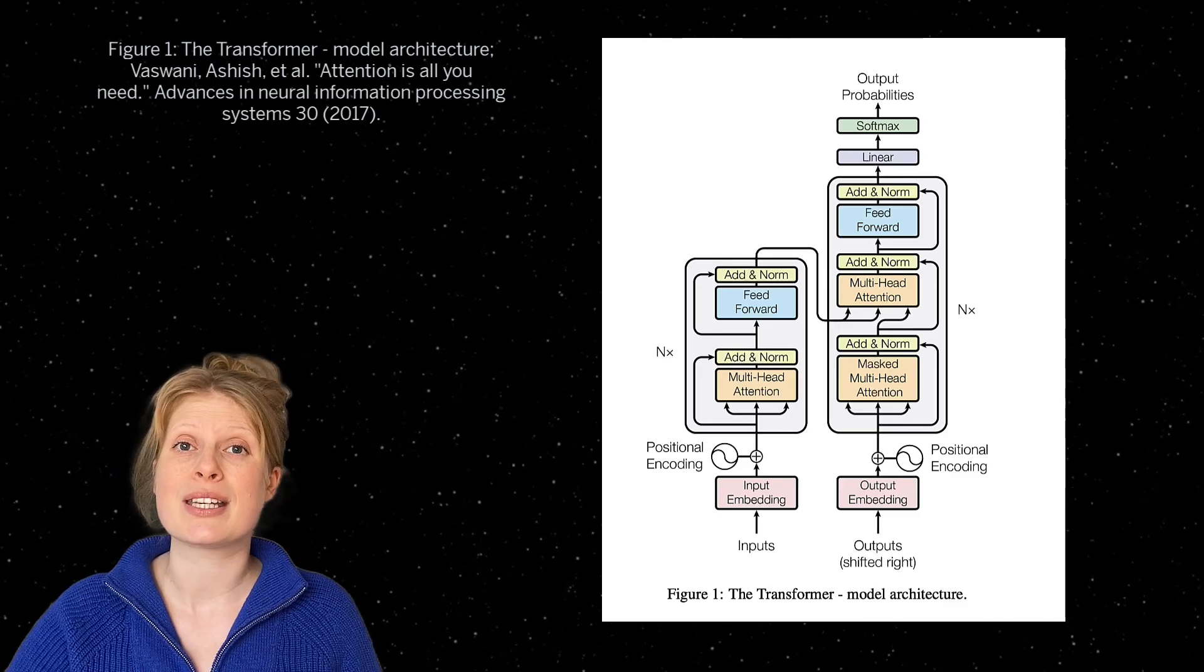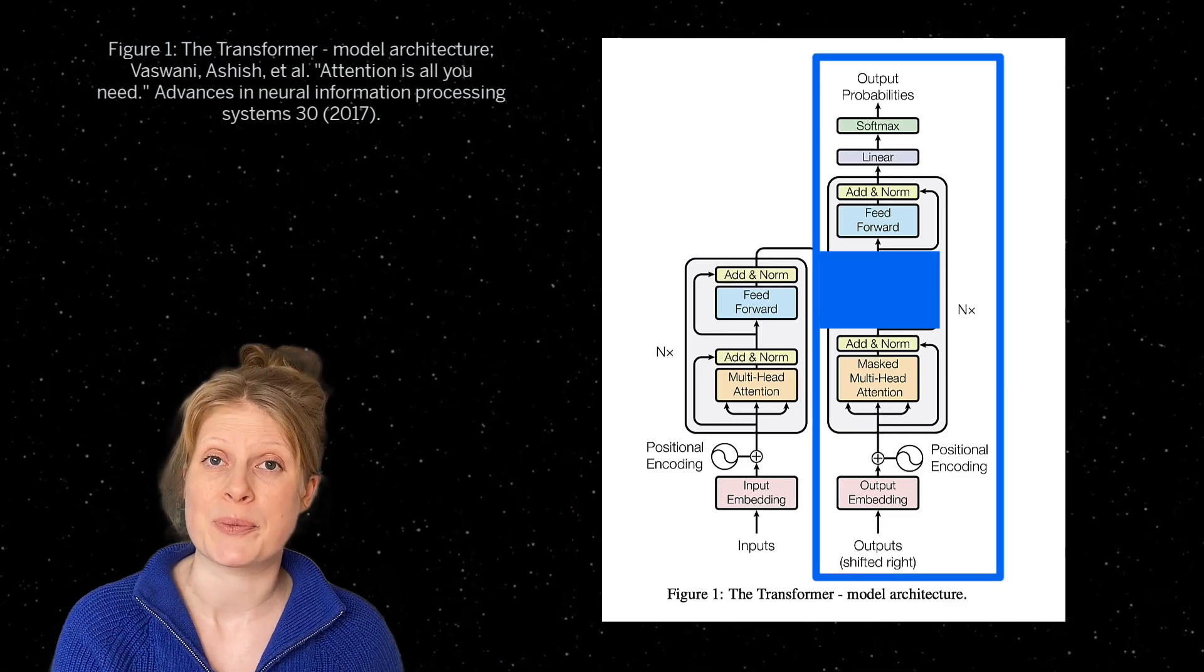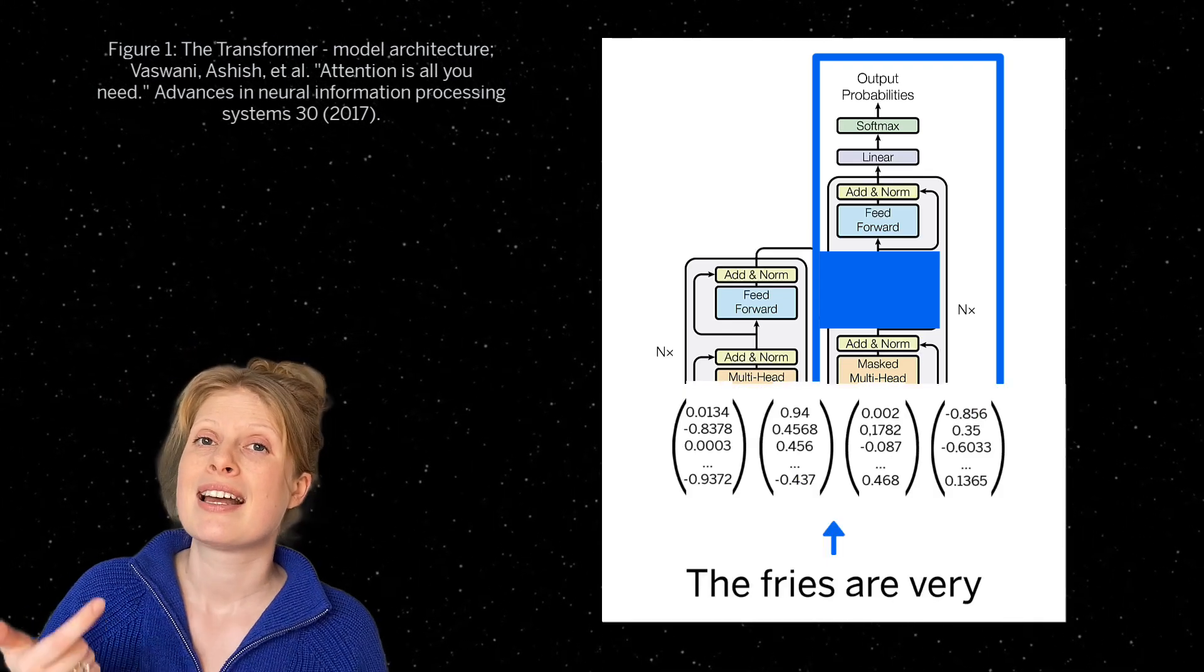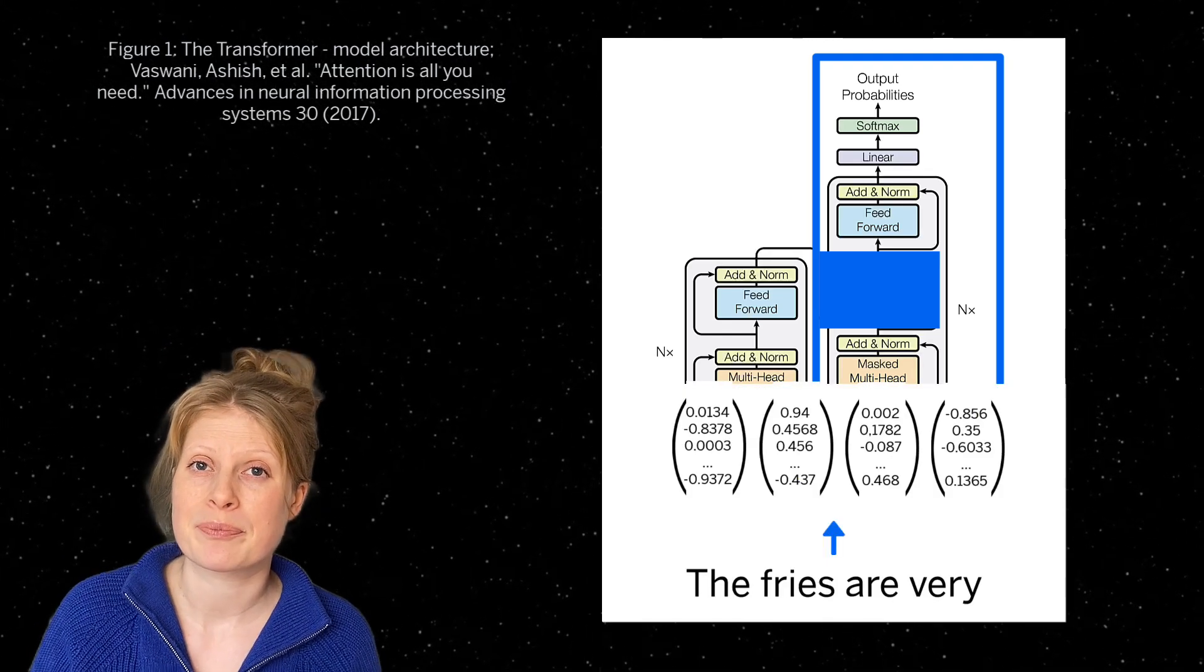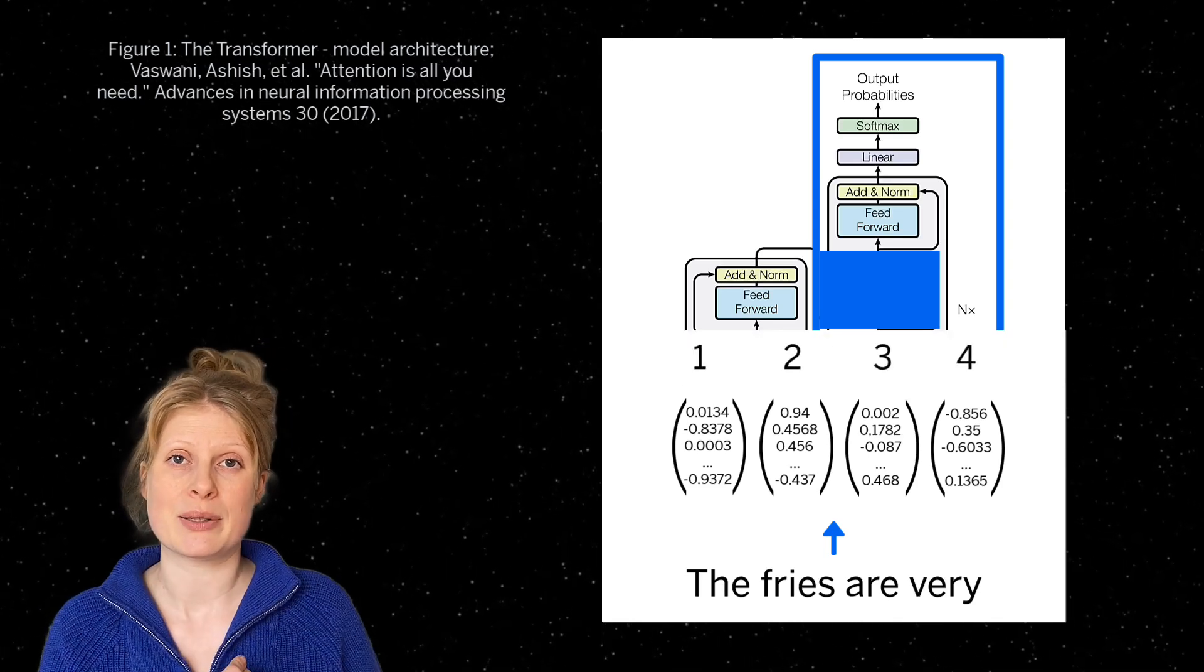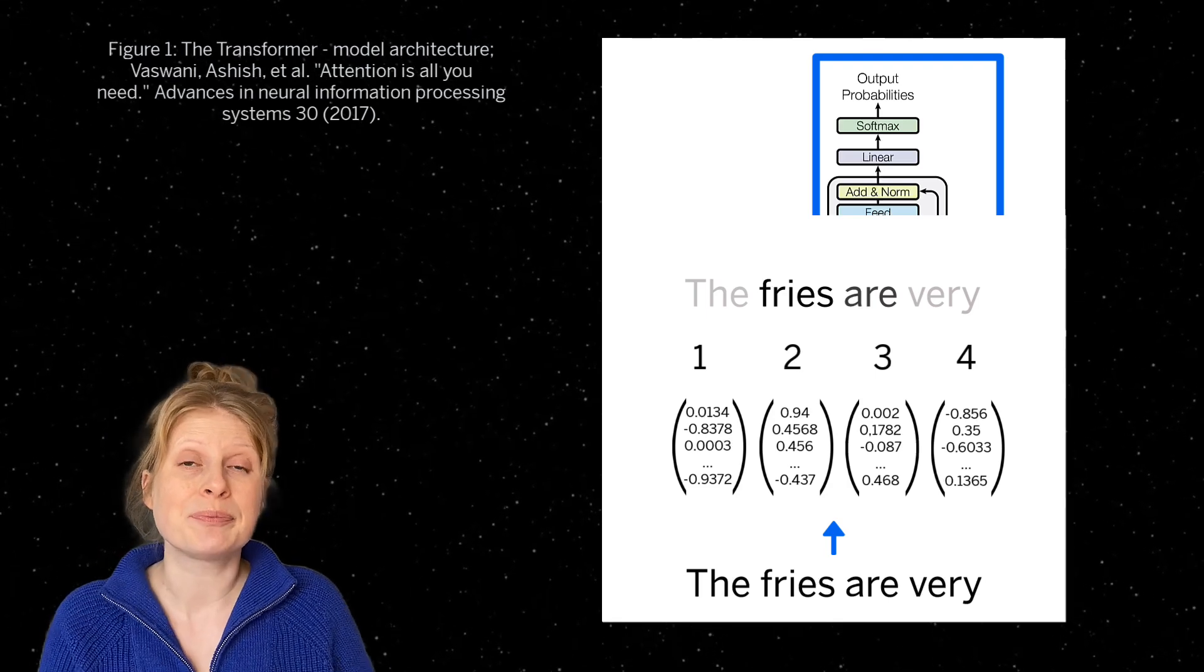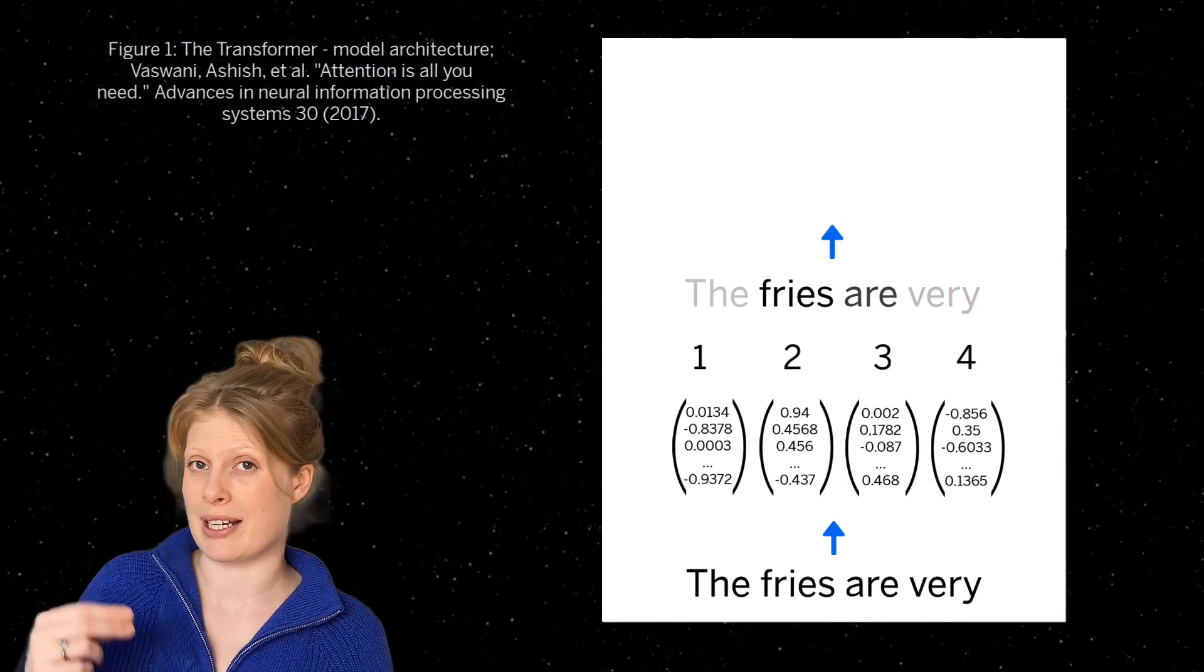Large language models only use the decoder part of the architecture. So what happens is the transformer turns all words into vectors, adds positional encodings, so where the word was in the sequence, calculates the context, so which words are important to attend to, and then decides which word should come next.